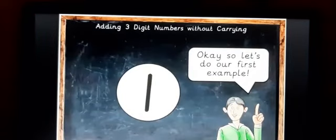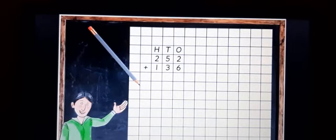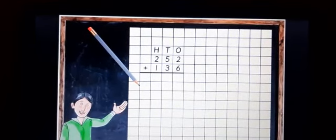Let's do the first example. You can see here how it is written. First you mention the hundreds, tens, and ones place, then below that write the number: 252 plus 136. After writing the numbers one below the other, you put an underline. In the rough column you can count first if needed, or do it directly if you know the additions.